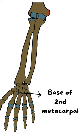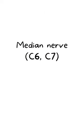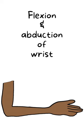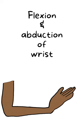It is innervated by the median nerve through its C6-C7 fibers. It causes flexion and abduction of the wrist joint.